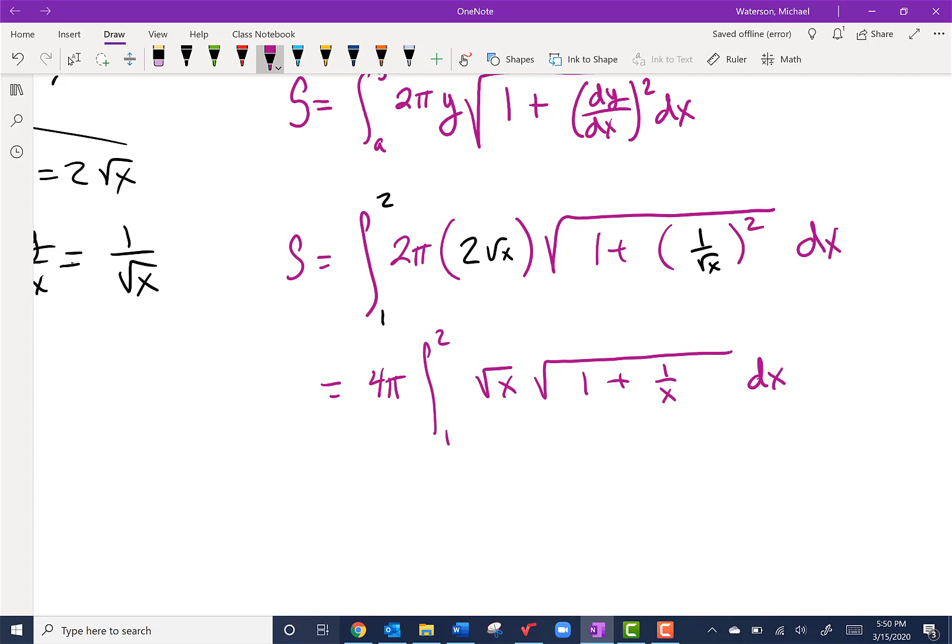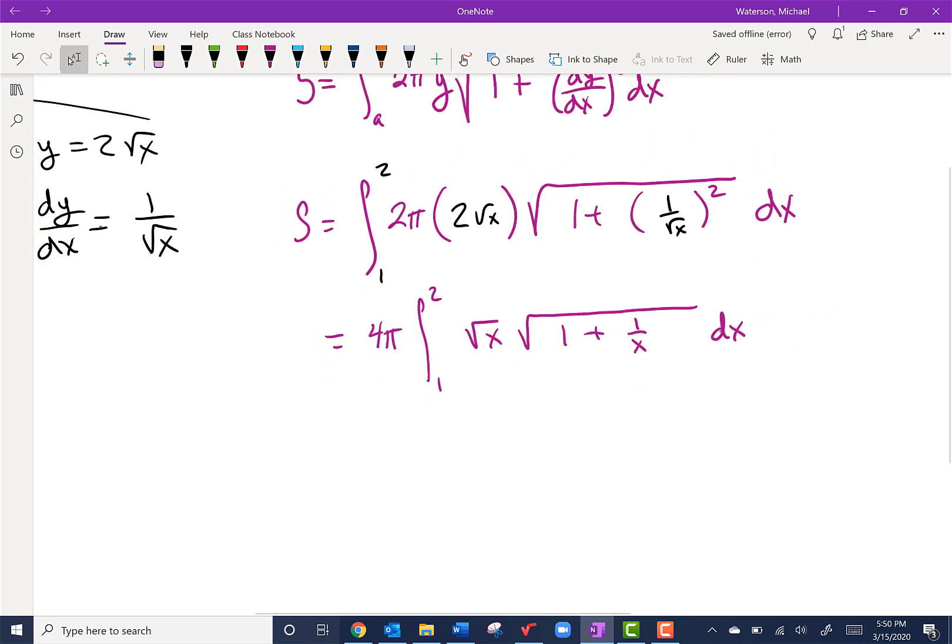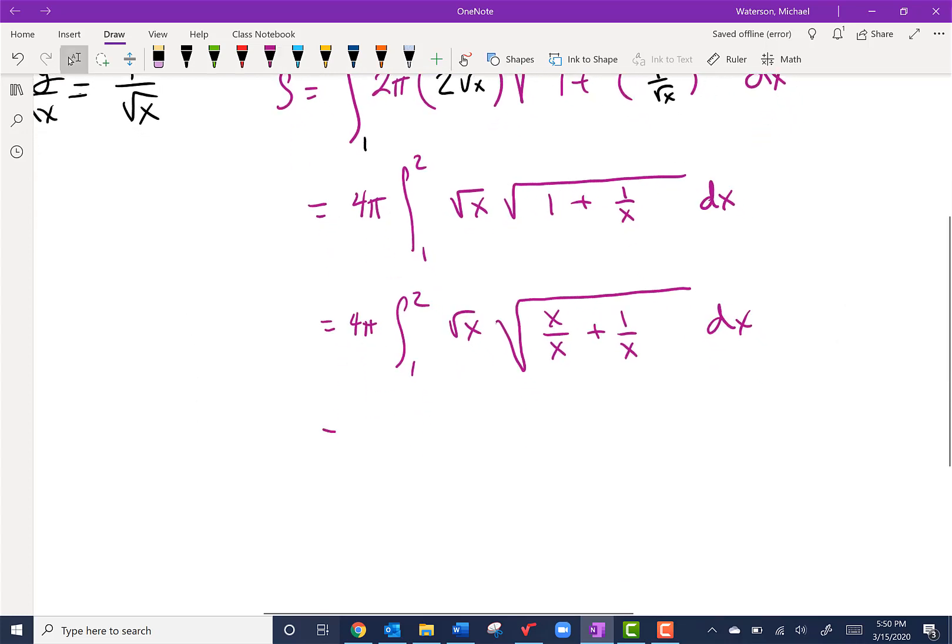Now this one looks a little bit tricky. We might want to manipulate the radicand underneath our second root. I think there will be a cool way we can make this all pop out. So we got 4π from 1 to 2. Let's leave our √x alone, but let's create a common denominator in here. Let's put this together: x/x + 1/x.